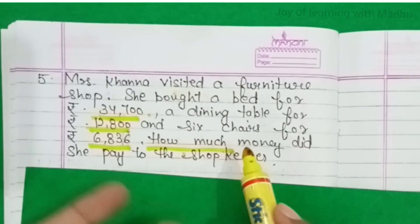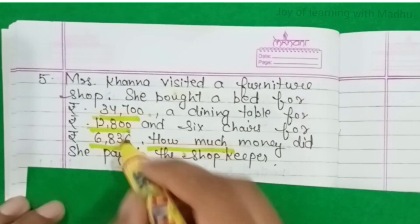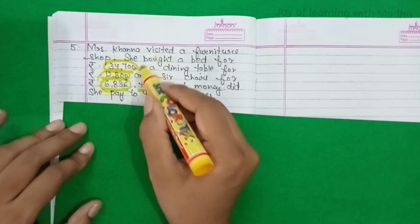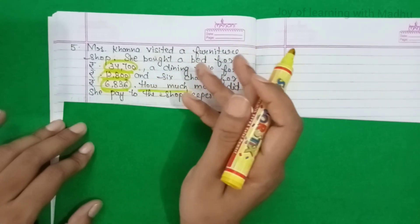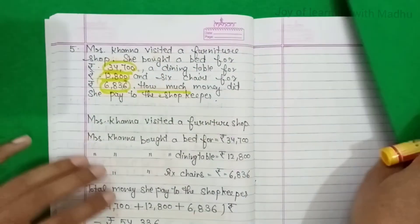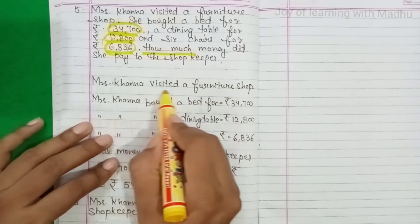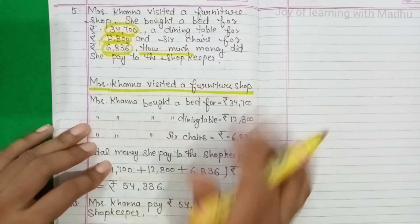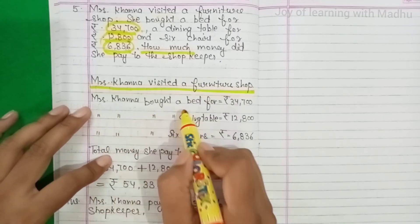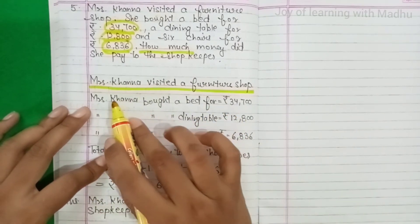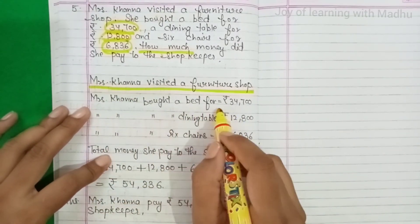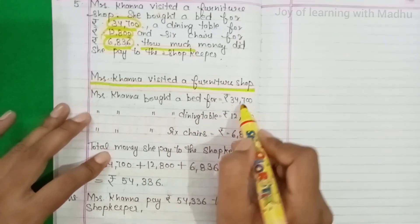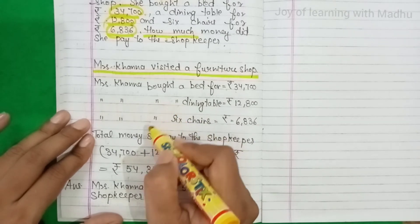How much — कैसे पता लगेगी? इन तीनों numbers का total निकालेंगे। Statement: Mrs. Khanna bought a bed for Rs. 34,700. यहाँ पे एक shortcut method भी है — same wording के लिए double comma लगाके लिख सकते हो, जिसका मतलब है जो ऊपर लिखा उसी का meaning यह है।